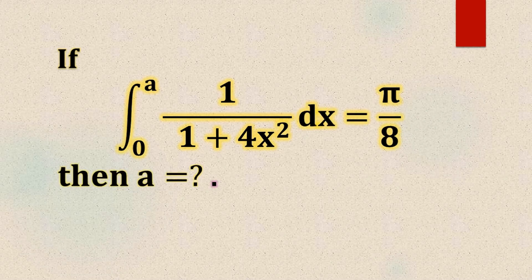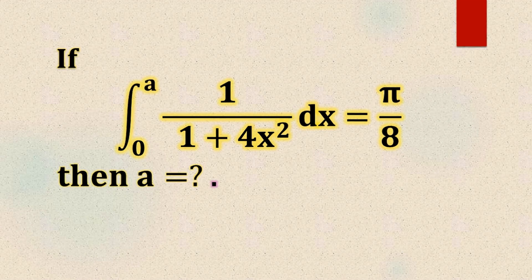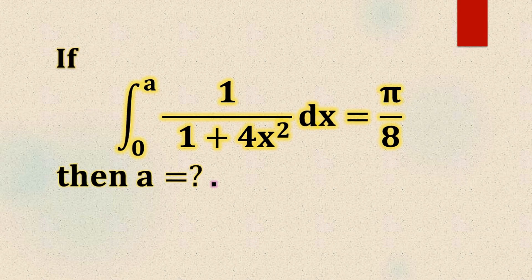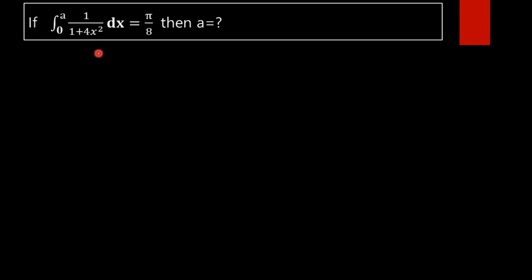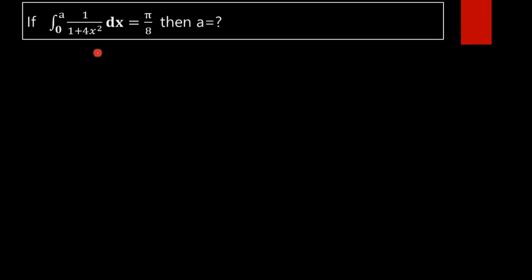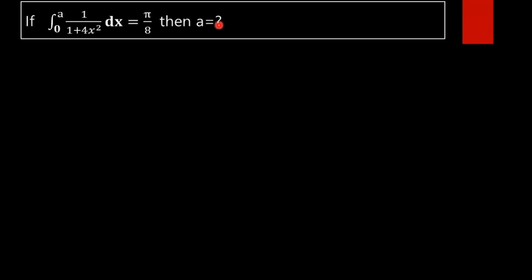If the integral from 0 to a of 1/(1 + 4x²) dx equals π/8, then find the value of a.